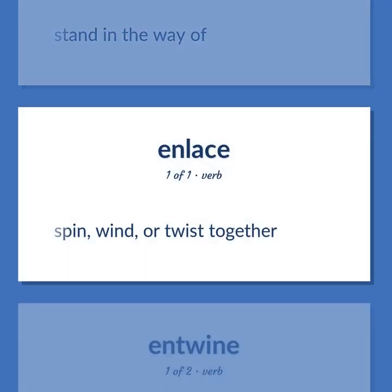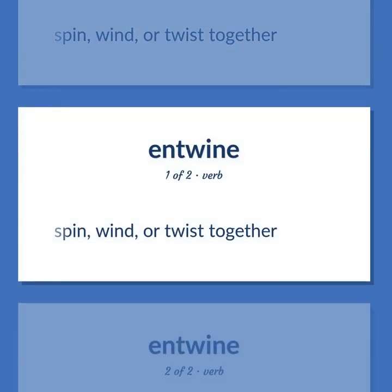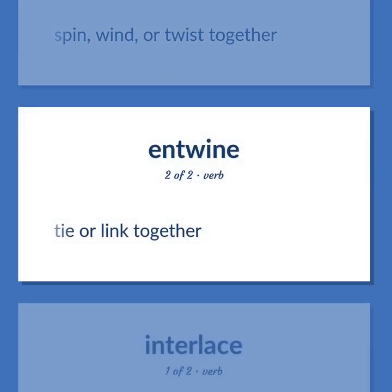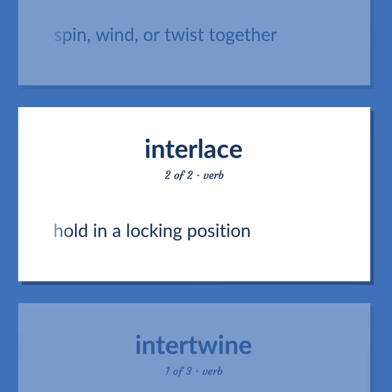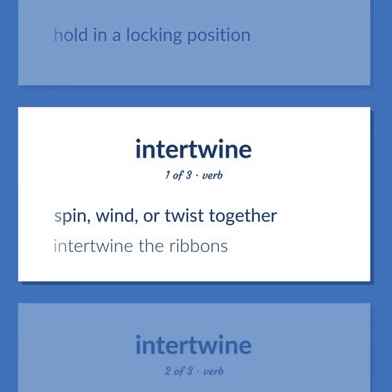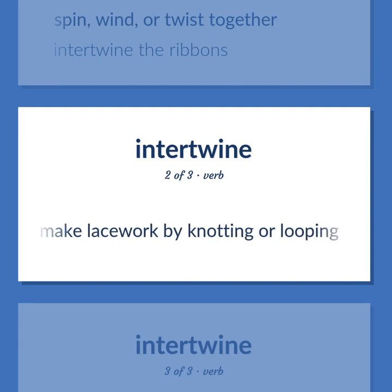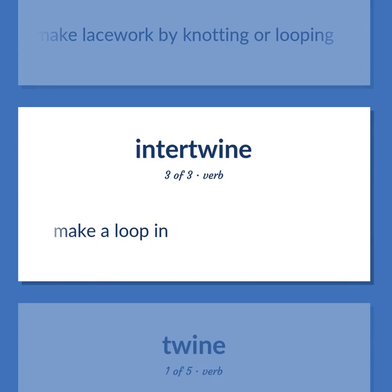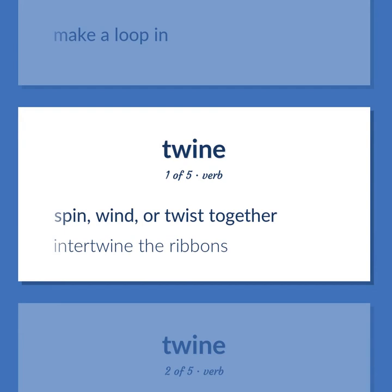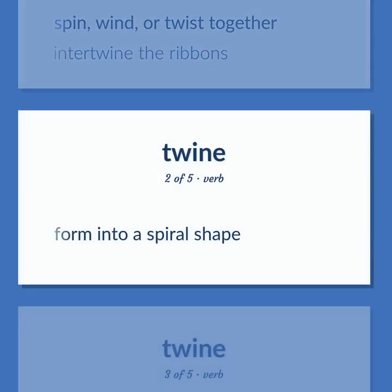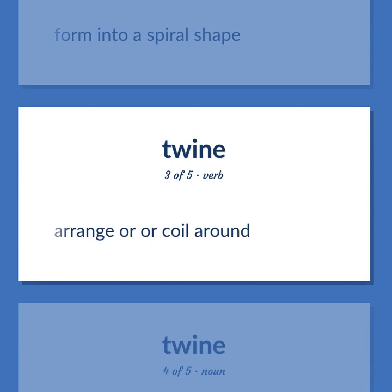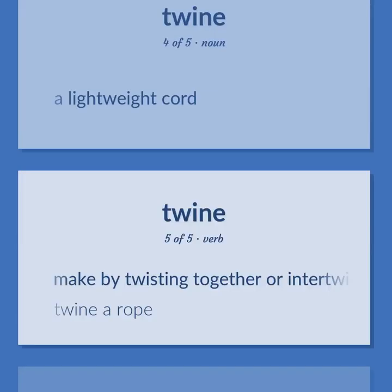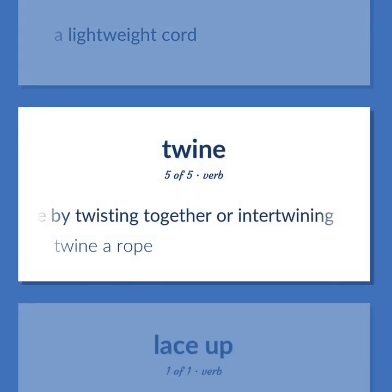Intertwine: to spin, wind, or twist together. To tie or link together. To hold in a locking position. To spin, wind, or twist together. Example: intertwine the ribbons. To make lacework by knotting or looping. To make a loop in. To spin, wind, or twist together. Example: intertwine the ribbons. To form into a spiral shape. To arrange or coil around. Twine: a lightweight cord. To make by twisting together or intertwining. Example: twine a rope. To draw through eyes or holes.